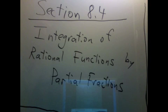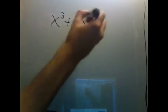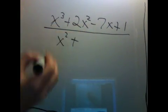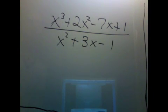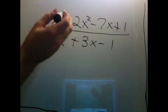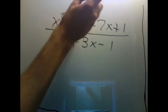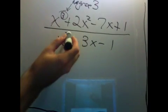This section is about integration of rational functions by partial fractions. A rational function is a polynomial divided by a polynomial. For example, x cubed plus 2x squared minus 7x plus 1 over x squared plus 3x minus 1. The top is a cubic polynomial and the bottom is a quadratic polynomial. The degree of a polynomial is the power of the highest term, so here we have a degree 3 polynomial divided by a degree 2 polynomial.